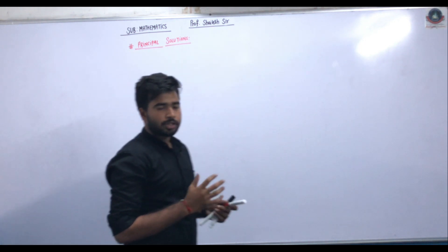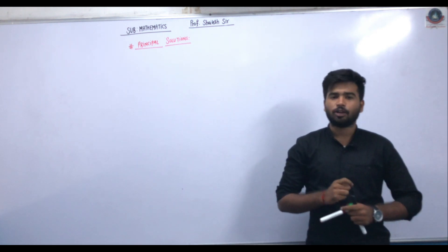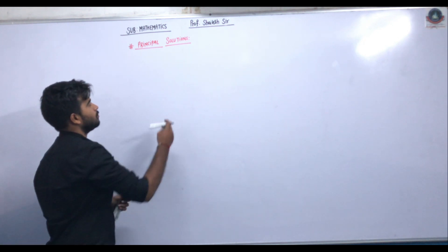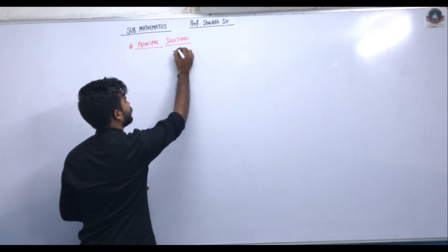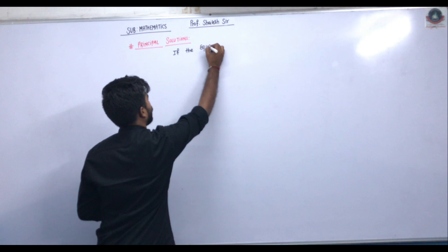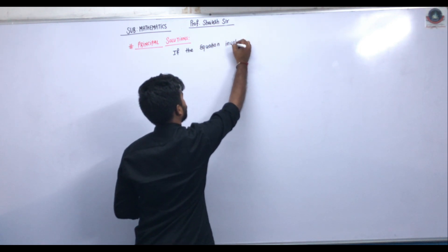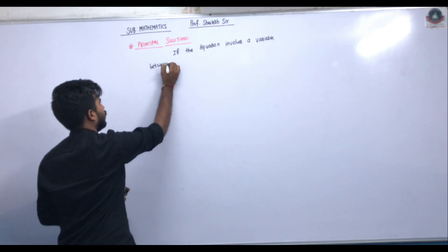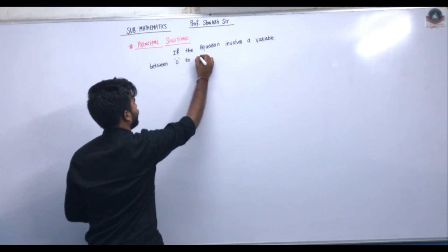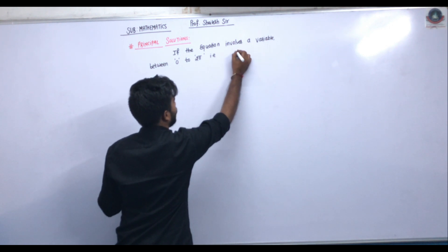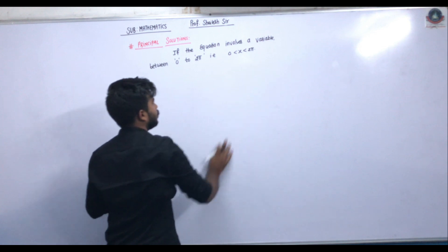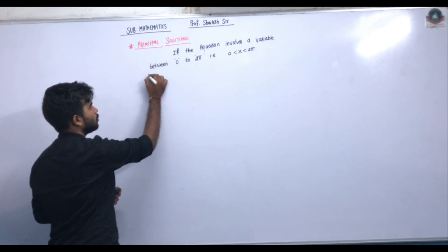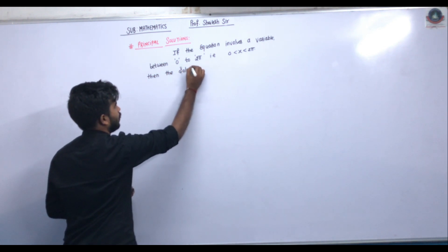The principal solutions is a solution in which the variable is between 0 to 2π, and the range is 0 to 2π. So this is the definition. If the equation involves a variable which is greater than 0 but less than 2π, then the solution is the principal solution.